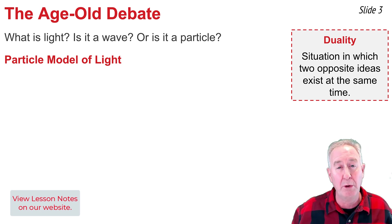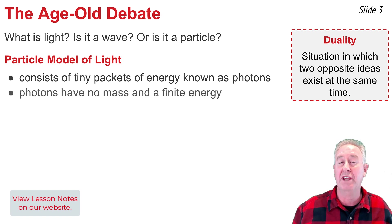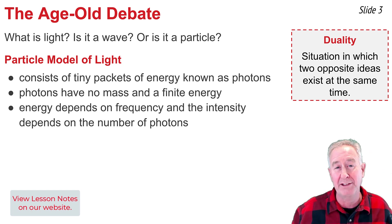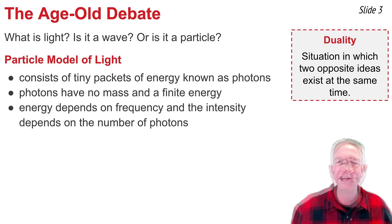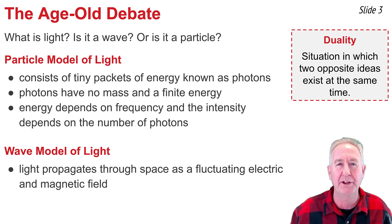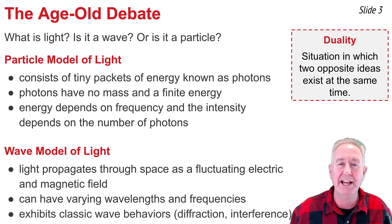To understand the distinction between the particle and wave model of light, consider the following. According to the particle model, light consists of tiny packets of energy known as photons. These photons have no mass but a finite energy, and the energy of a photon is dependent upon the frequency of light. The number of photons determines the intensity of light. In contrast, the wave model suggests that light propagates through space as a wave with a fluctuating electric and magnetic field — an electromagnetic wave with varying wavelength and frequency that exhibits classic wave behavior such as interference and diffraction.